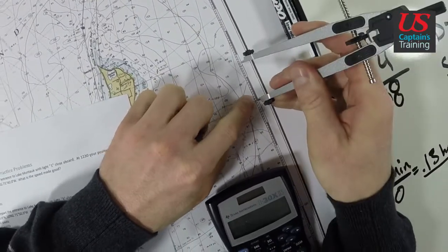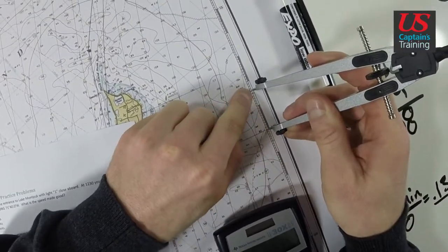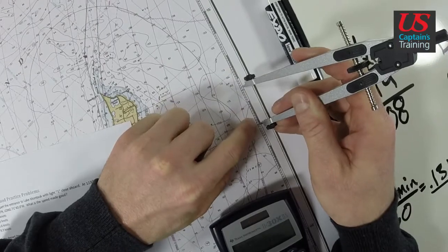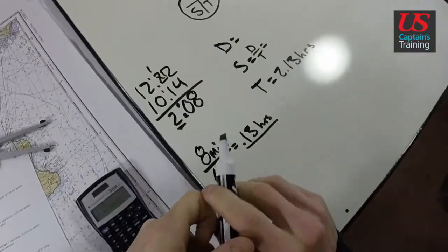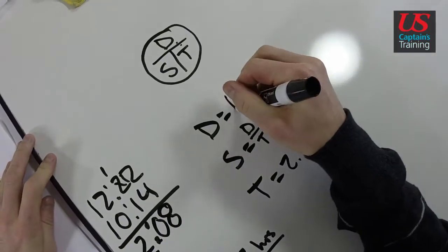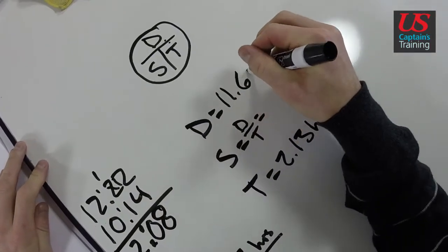Ten plus 1.6. So I got 11.6 for my distance. Distance is 11.6, 11.6 nautical miles.